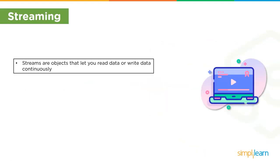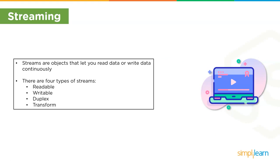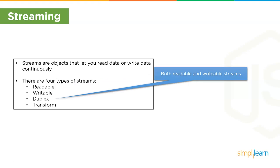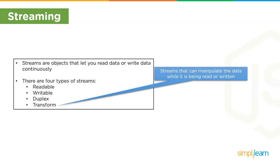Next up we have streaming. A stream is an abstract interface for working with streaming data in Node.js. Streams are objects that let you read or write data continuously. There are four types of streams: readable — from which data can be read; writable — to which data can be written; duplex — both readable and writable; and transform — streams that can manipulate data while it is being read or written.